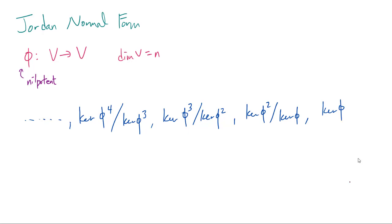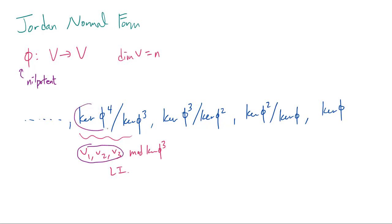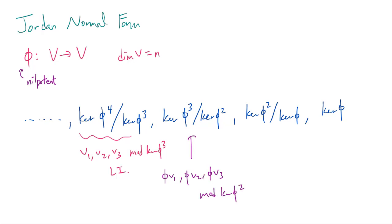Now let us consider some linearly independent vectors in this quotient space. So let's say we have some V1, V2, V3 mod kernel of phi cubed that are linearly independent in this quotient space. Since V1, V2, V3 are in kernel of phi to the 4th, that's telling us that when we apply phi to them — phi(V1), phi(V2), and phi(V3) — and we take mod kernel of phi squared, then these should be in this quotient space.